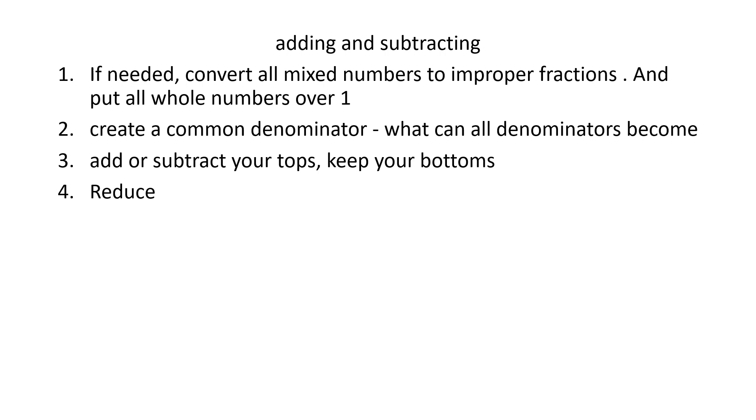So your first step is an if step. If needed, convert any mixed numbers to an improper fraction, and we do that with the wheel. And then any whole numbers put over one. Your second step is to create a common denominator. Technically, you need to find the least common multiple of your denominators. Basically, just ask yourself, what can all my denominators become?